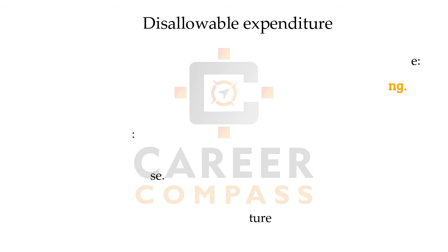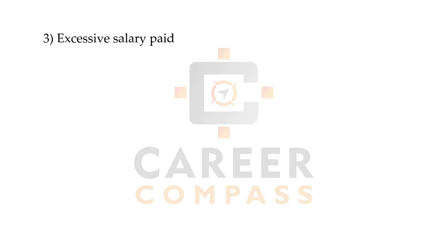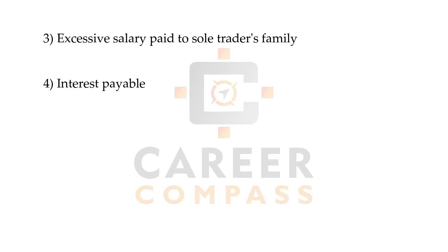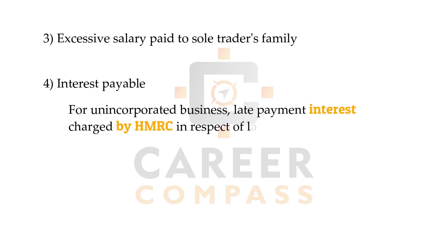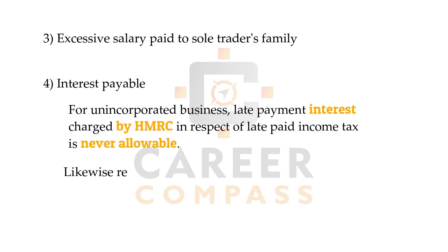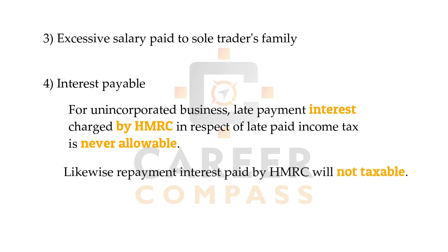The third item is excessive salary paid to family members. If a family member is working at a reasonable salary, that's fine, but any excessive salary will be disallowed. Fourth, for sole traders or partnerships, if the owner misses the due date for income tax payment, HMRC will charge interest or a penalty. That penalty or interest is a personal liability of the owner — not a business expenditure — so it is disallowed and must be adjusted.